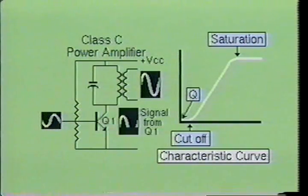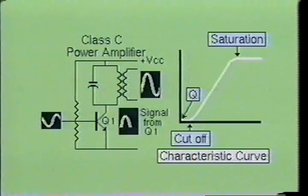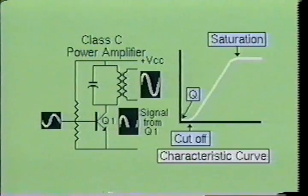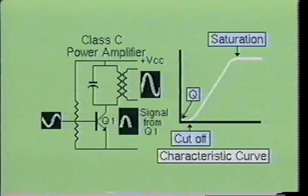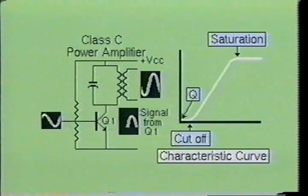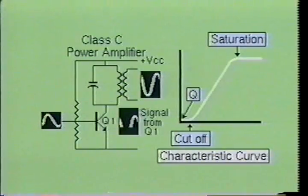Another type of power amplifier is the class C amplifier. The class C amplifier is normally biased at two and one half times the cutoff point. The class C amplifier introduces significant amounts of amplitude distortion and is not used for audio reproduction. Q1 only produces pulses of current into the tank circuit, and since it does not continuously conduct a steady flow of current, it cannot faithfully reproduce the incoming signal. Class C amplifiers are normally used in oscillator circuits.